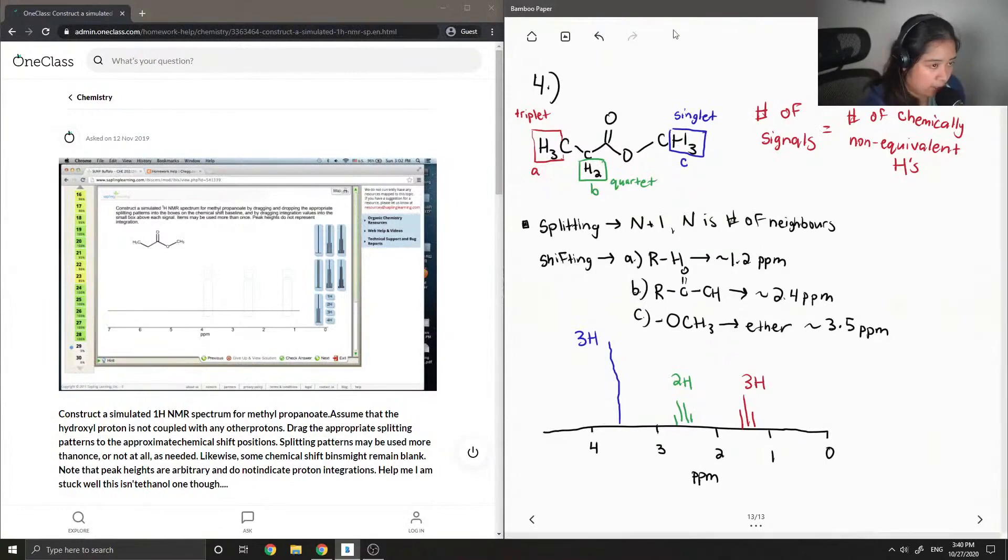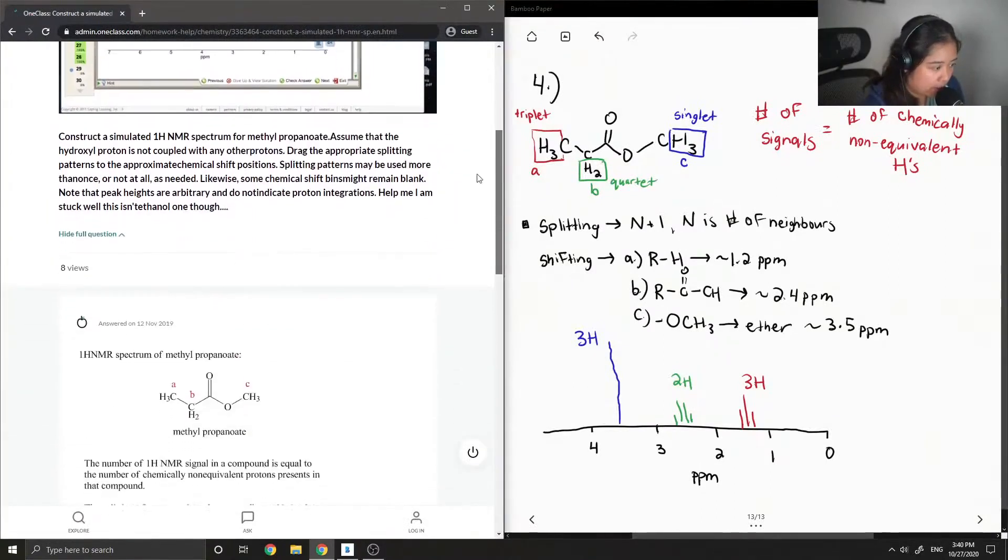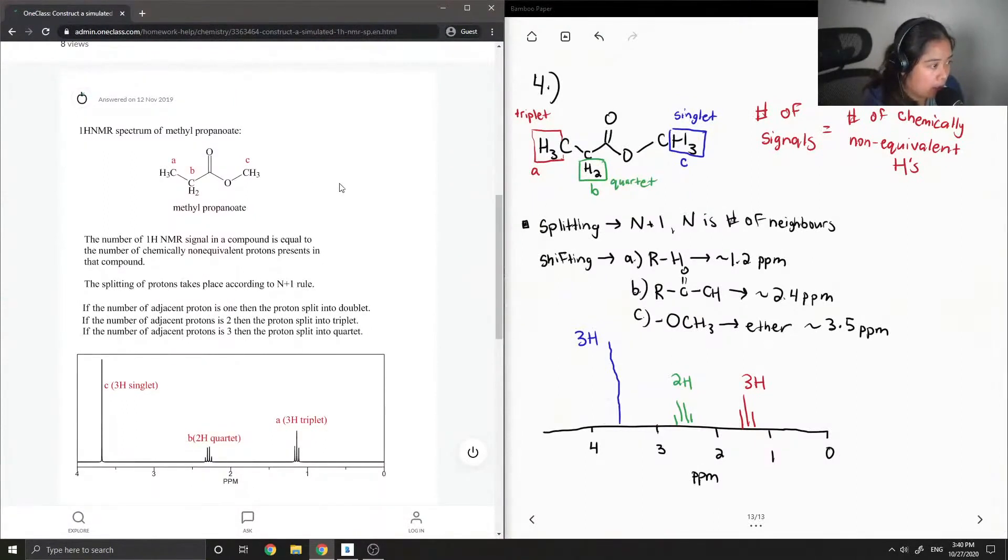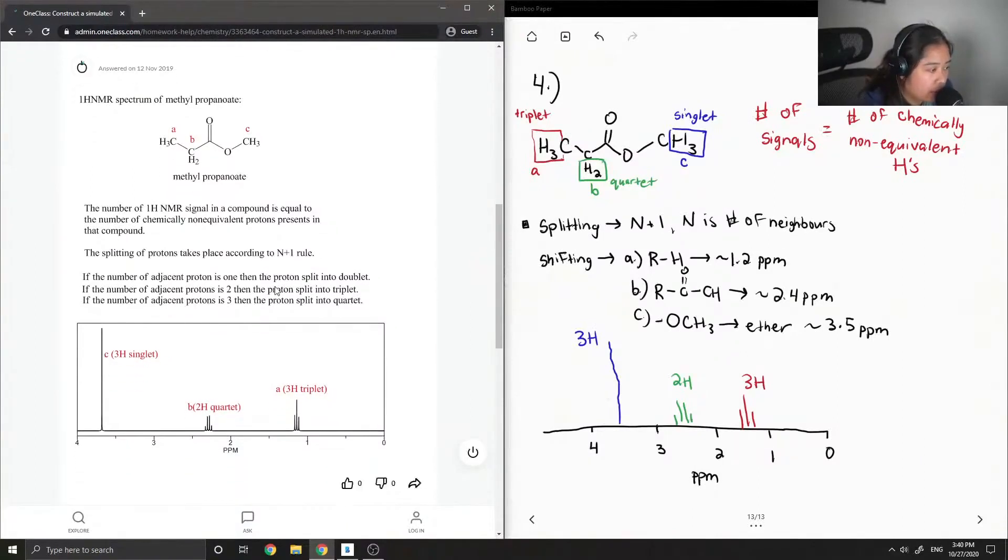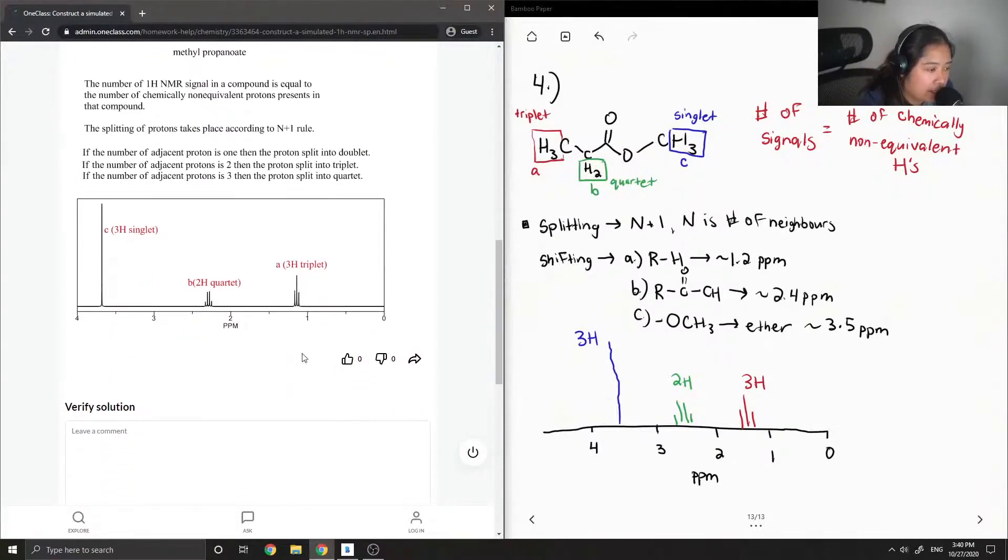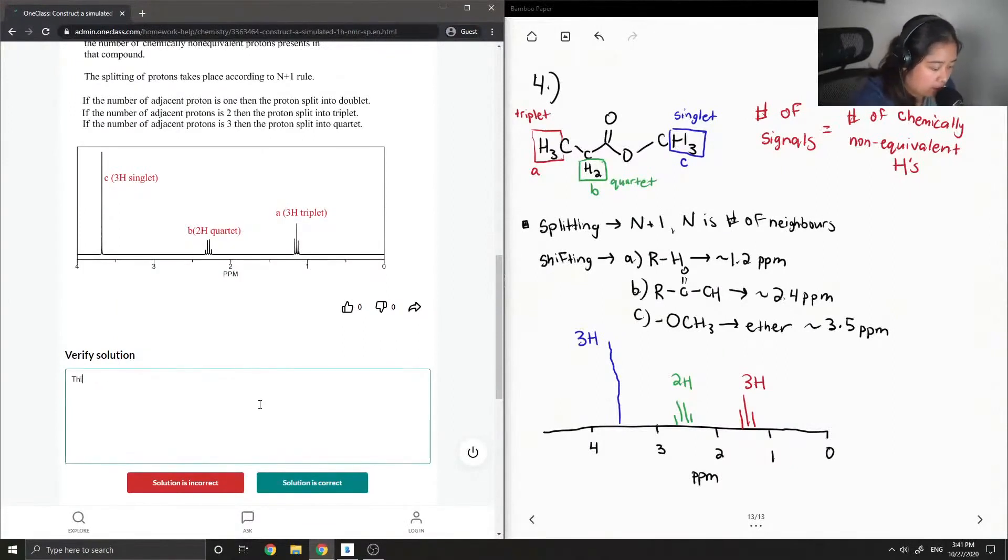So let's look at the answer from our junior tutor. They drew out all the different hydrogens that are present. They talked about the splitting and using the n plus 1 rule. And then they have our singlet here. And then our 2H quartet around here. And then the 3H triplet there. So this solution is correct.